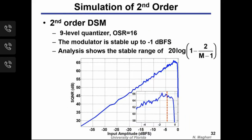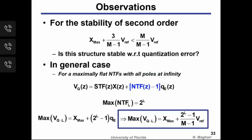Simulation with a 9-level quantizer confirms the second-order modulator is stable up to −1 dB full scale, which equals 20·log(1 − 2/(M−1)) — consistent with the hand calculation when numbers are plugged in. For the general L-th order case with all poles at infinity, the maximum V_Q is X_max + (2^(L−1))/(M−1) · V_ref.